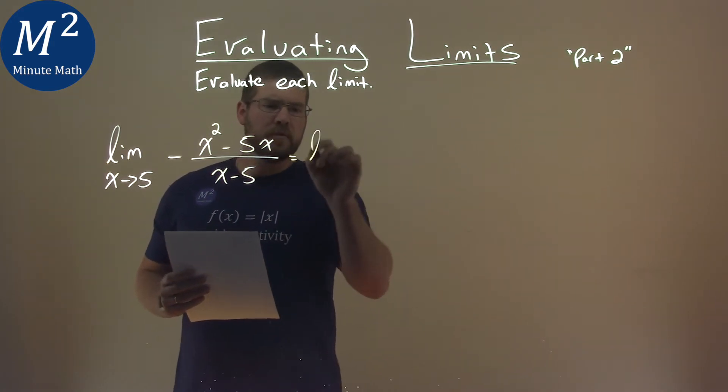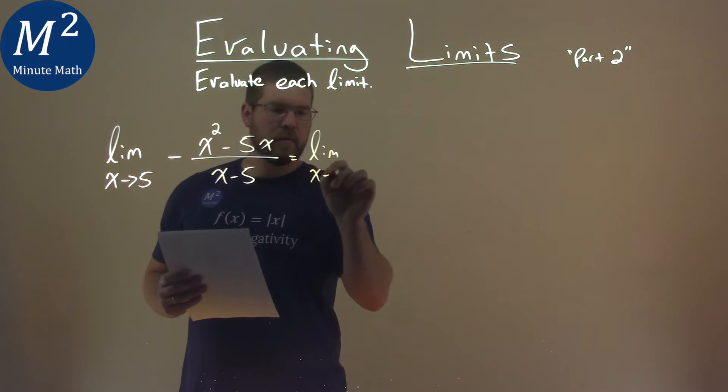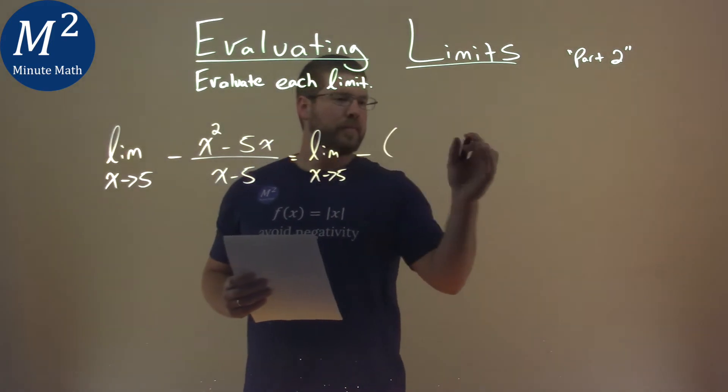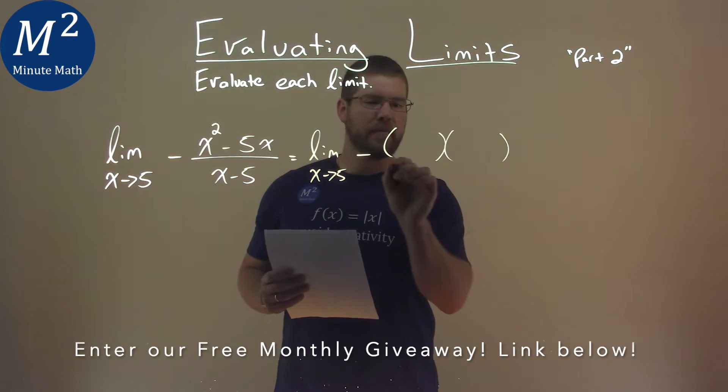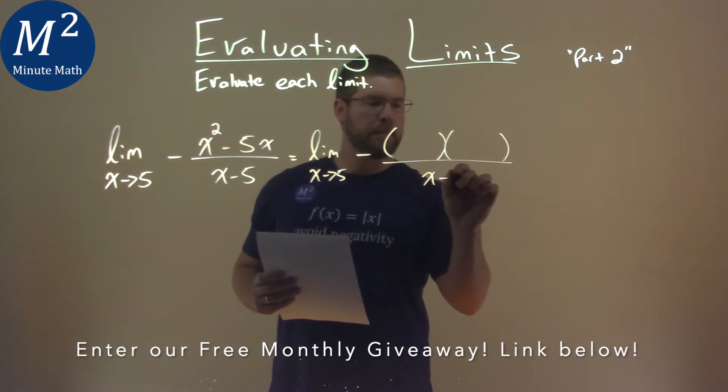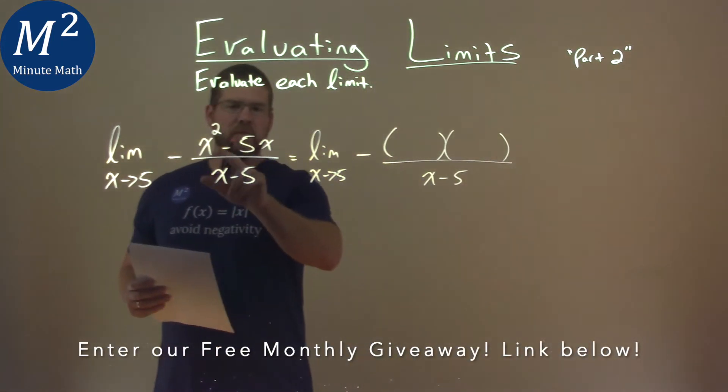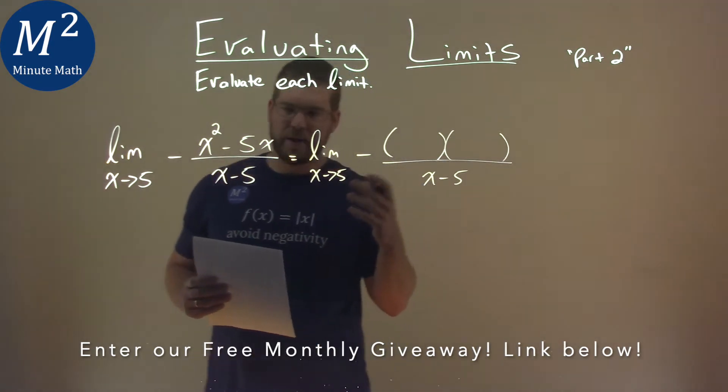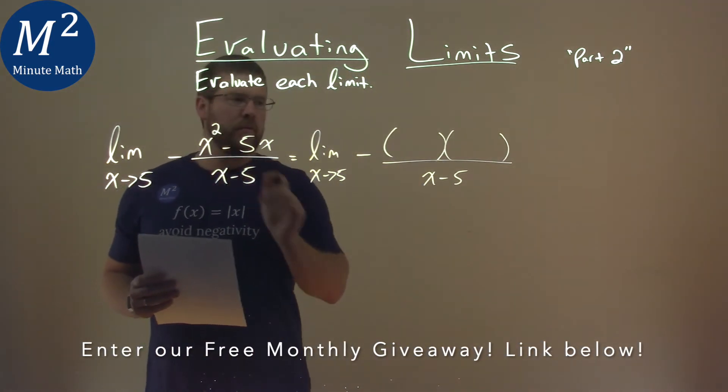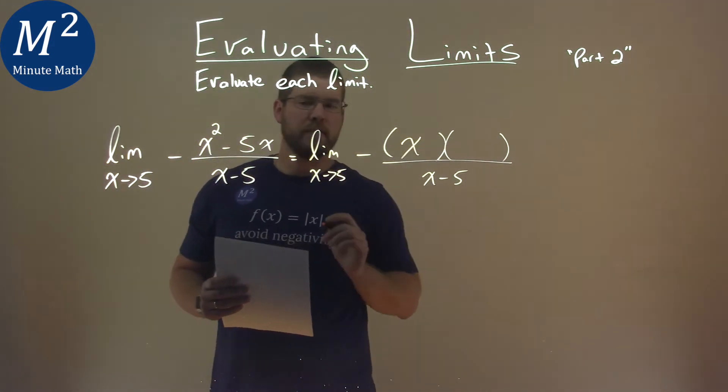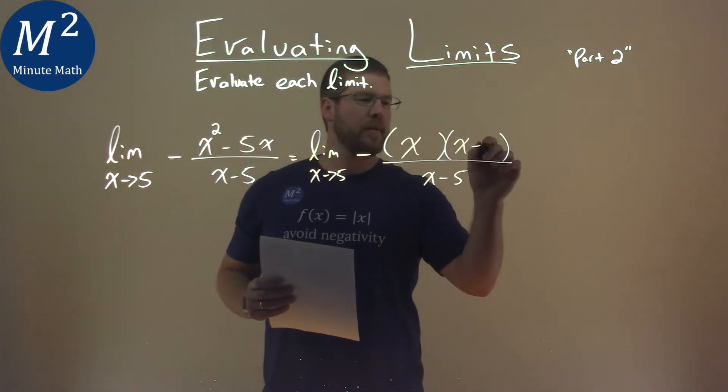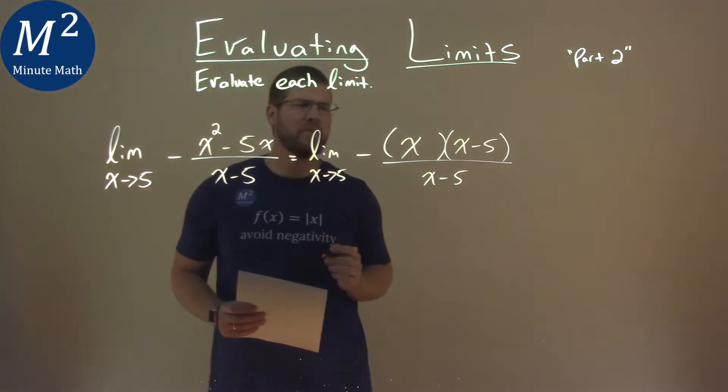So what I'm going to do is take the limit again as x approaches 5, but we're going to factor that numerator out. Now, this one's actually not a full, well, it's a factor, but we can see there's an x in both parts. So we pull out the x here, we're left with an x minus 5, and that's what we're really looking for.